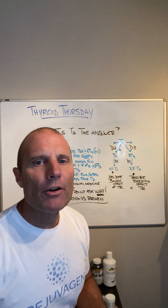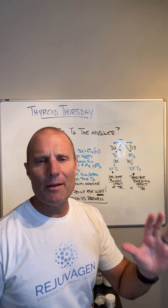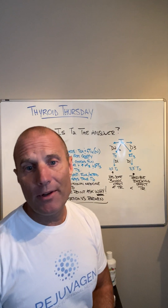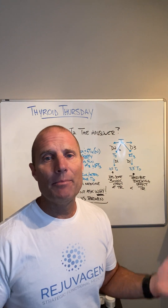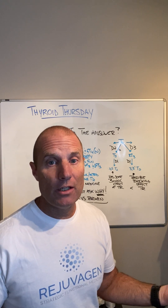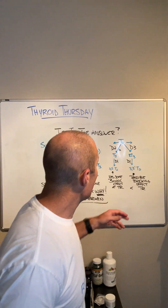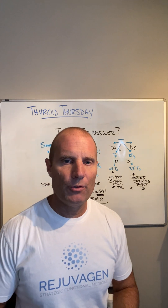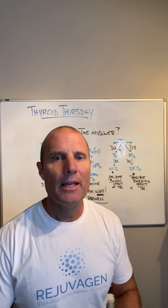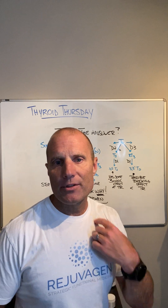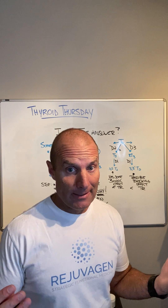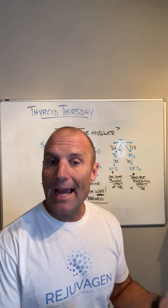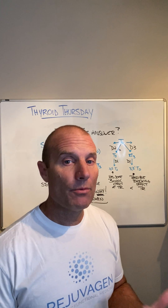Your thyroid gland makes primarily T4 — it makes primarily T4. It makes some T3, and then there's some T1, T2, and some other things your thyroid gland makes. T4 then has to be converted once it gets to the cells into the active hormone T3, or the cells can deactivate that T4 into something called reverse T3. What determines whether you convert T4 to T3 or T4 to reverse T3 is based on what's happening at the cell level. Cells have enzymes inside that can either activate T4 to T3, or deactivate T4 to reverse T3 and T3 to T2.